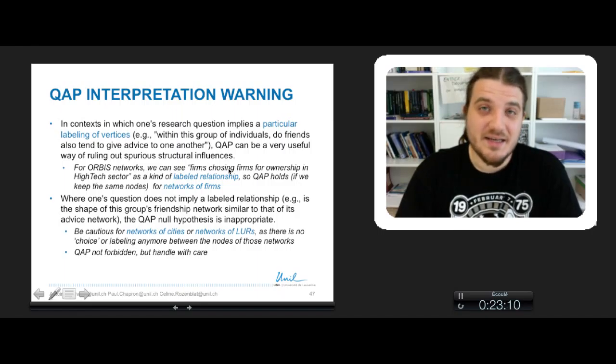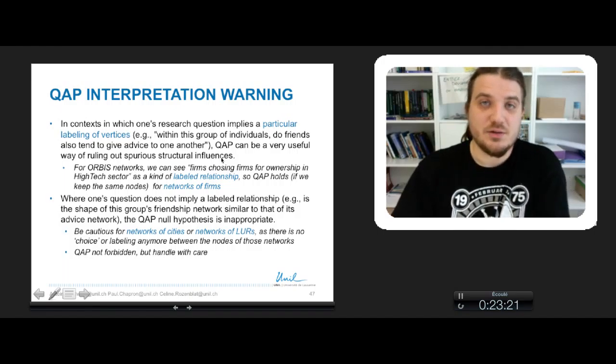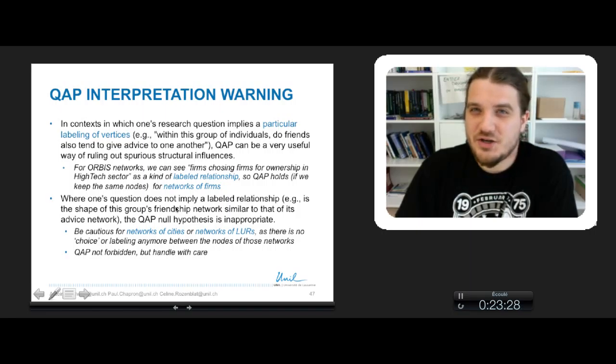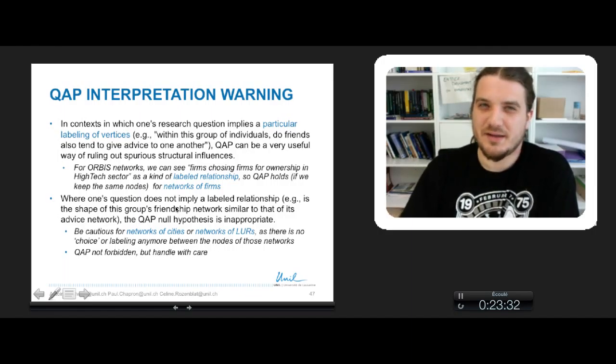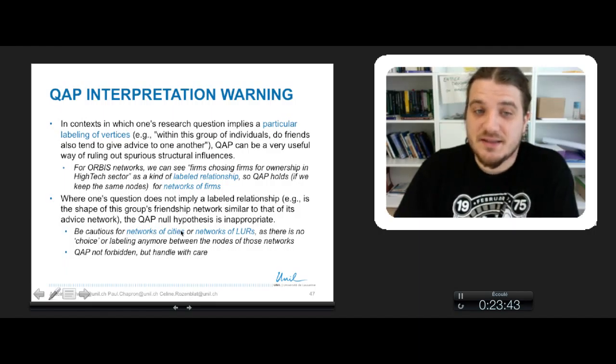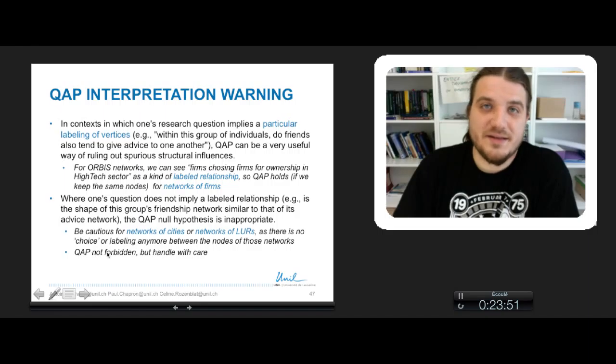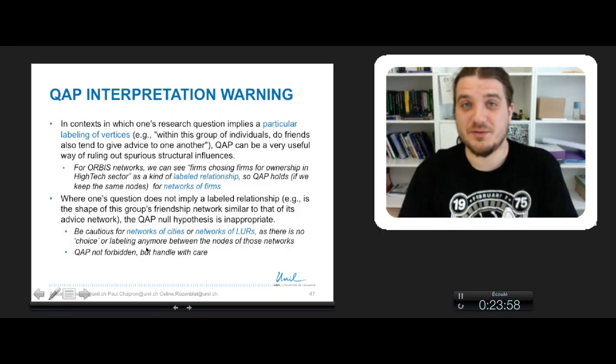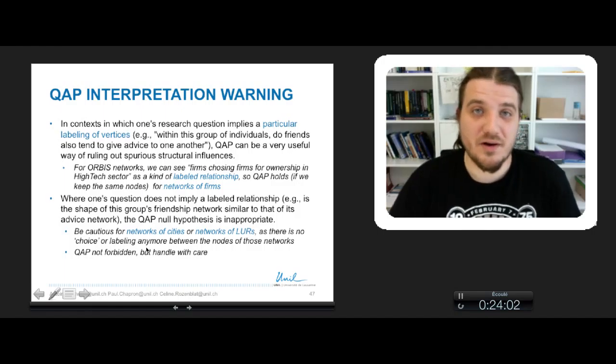But in case of networks of, let's say, city or a large urban region or some more aggregated spatial units, you have to be more careful because this is not a labeled dimension anymore. This is not a labeled relationship. You cannot say that Rome chooses Paris to interact. It's not as easily seen as in the firm, the networks of firms. So big issues for networks of cities or networks of large urban regions because there is no labeling anymore. We won't say that QAP is forbidden, but you have to use it with care because it's not a labeled relationship anymore, and the conceptors of the QAP test warn us about the use of QAP for non-labeled relationships.